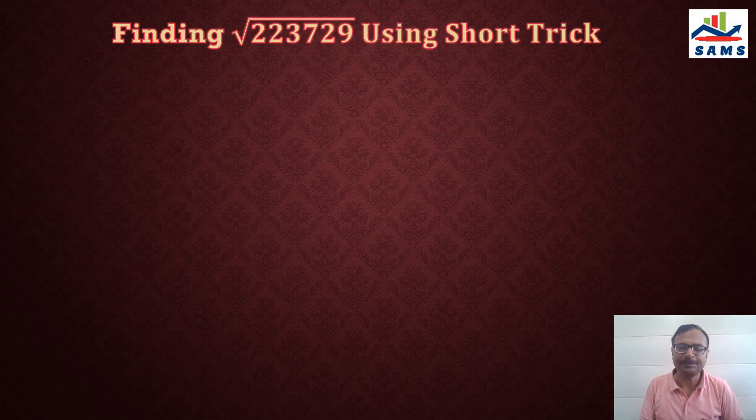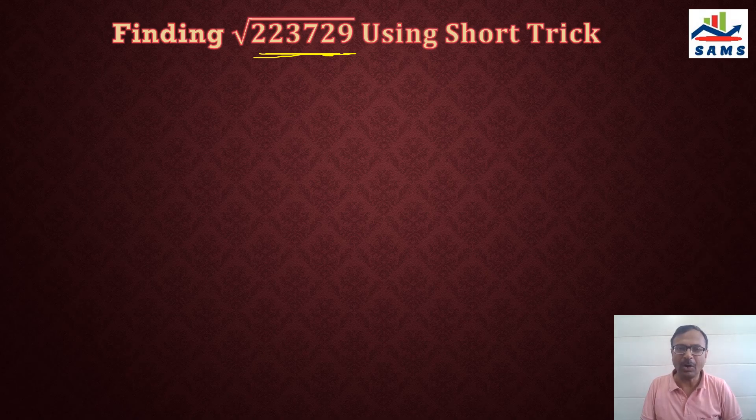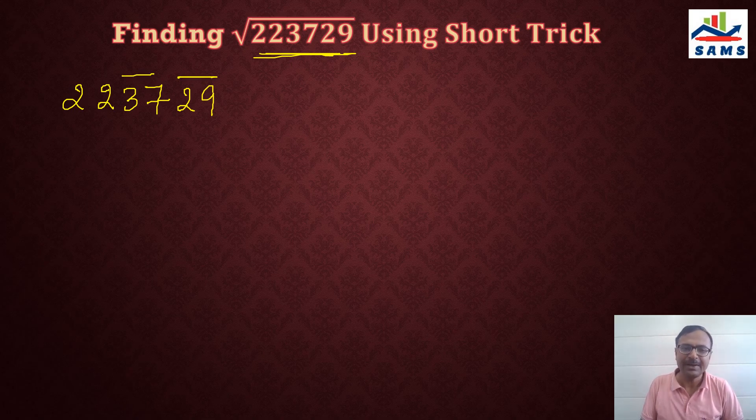Let's see the trick now. 223729 - huge number, right? Long division method is scary for at least 95% of students. After watching this video, you have to try this method on 5-digit, 6-digit, 7-digit perfect square numbers. When we have the number 223729, the first thing we do is pair up the numbers from the right-hand side. So 29 forms one pair, 37 the second pair, and 22 the third pair.